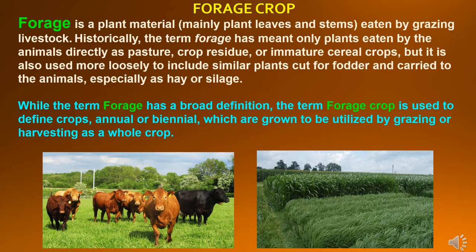Forage Crop: Forage is a plant material, mainly plant leaves and stems, eaten by grazing livestock. Historically the term forage has meant only plants eaten by the animals directly as pasture, crop residue or immature shear crops. But it is also used more loosely to include similar plant cut for fodder and carried to the animals, especially as hay or silage.